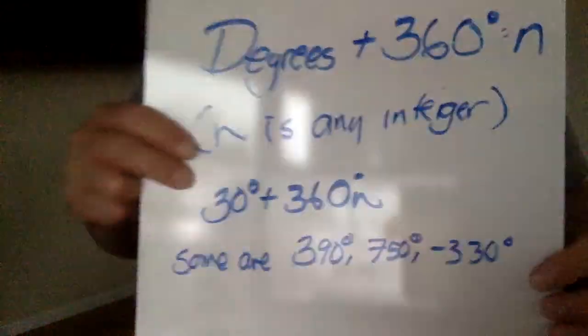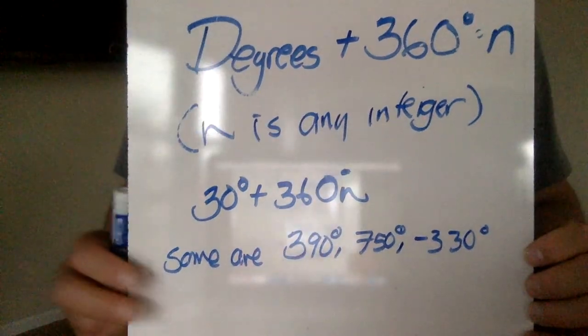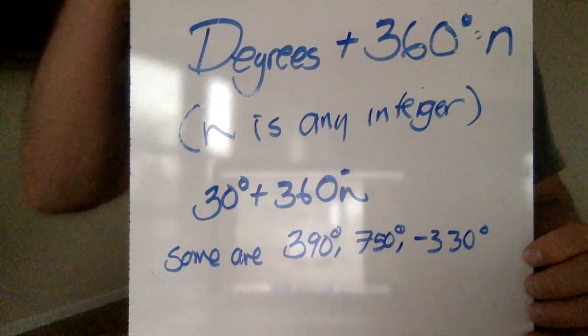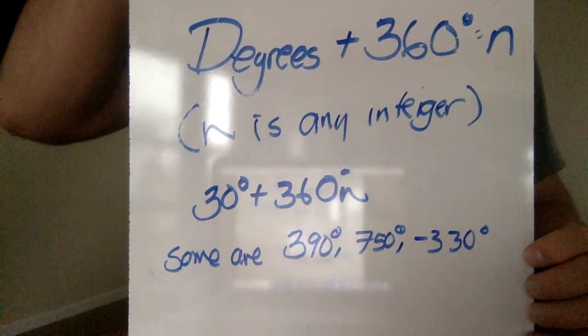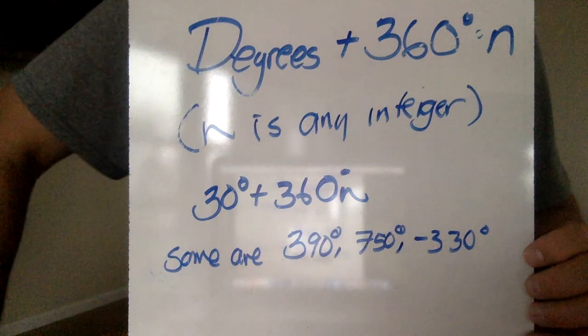So the formula you're going to use is this: degrees plus 360 times n, where n is an integer. And by the way, n could also be negative 1.